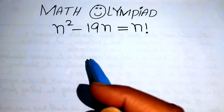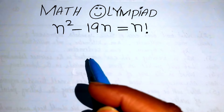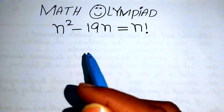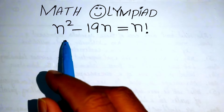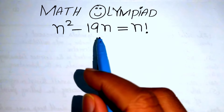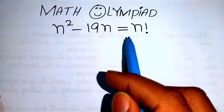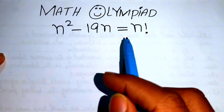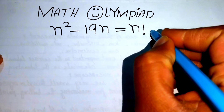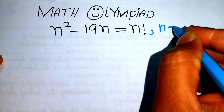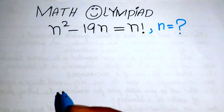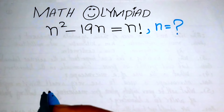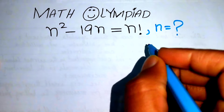Hello everyone, welcome back to the Map of Mathematics. In this video we are going to solve this nice factorial equation. Here we have n squared minus 19 times n equals n factorial, and we need to find the values of n. First, we will explain a little bit about the factorial.